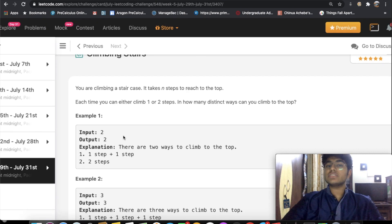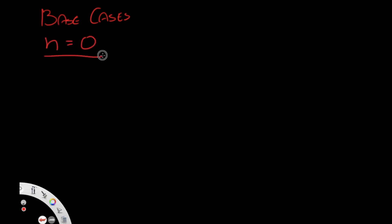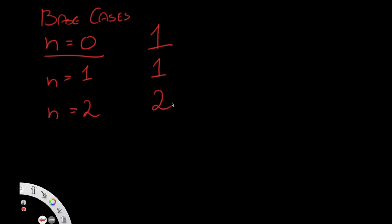Let's understand this question in more detail and how we can use recursion to solve it. First, let's look at the base cases. When n equals zero, the answer is one — you can only take zero steps, so there's one way to do that. When n equals one, you can only take one step, so there's one possible solution. When n equals two, you can either take two single steps or one double step, giving you two options. These three cases are our base cases.